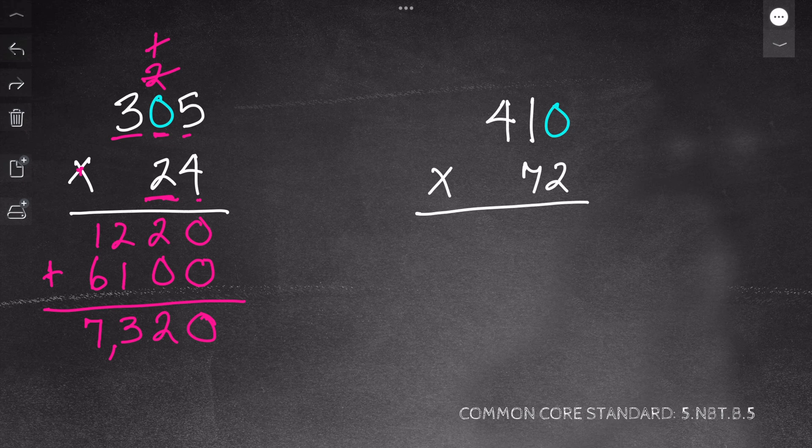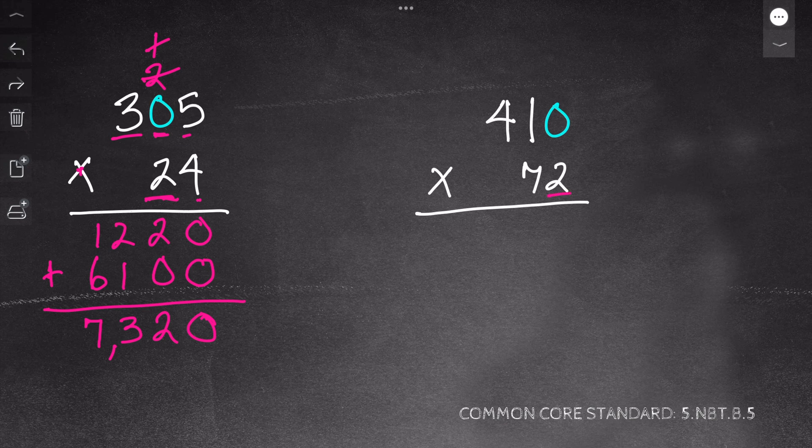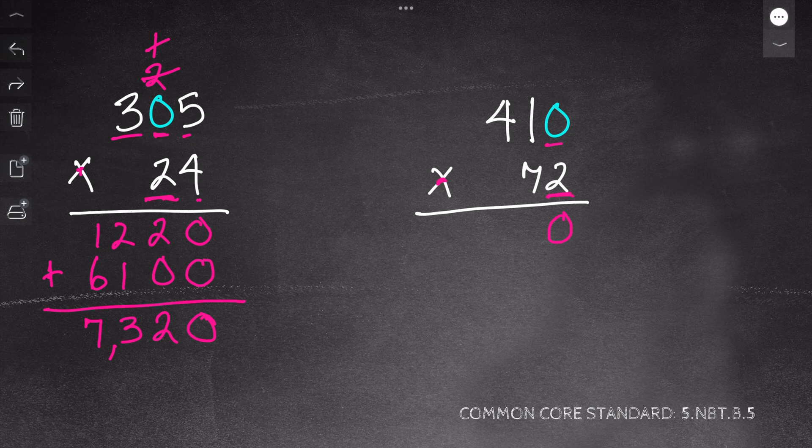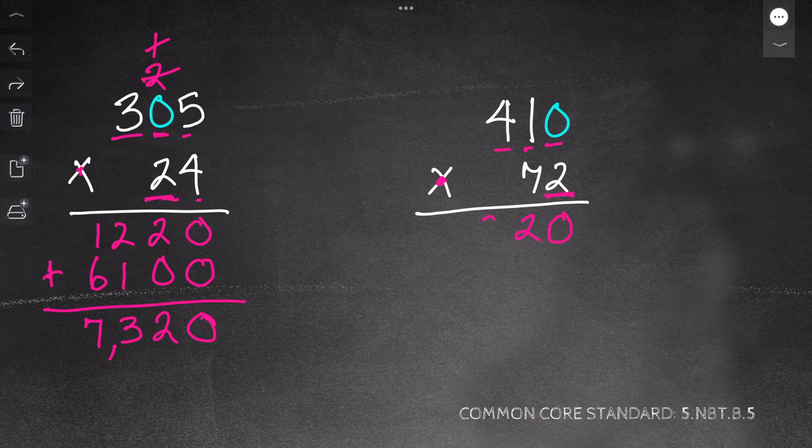Now I start my problem just like with regular multiplication of 2 times 0, which is 0. I have to put a 0 there because it's a place value holder. I can't just leave it blank. Now I'm going to move on to 2 times 1, which is 2. And then I'm going to do 2 times 4, which is 8.